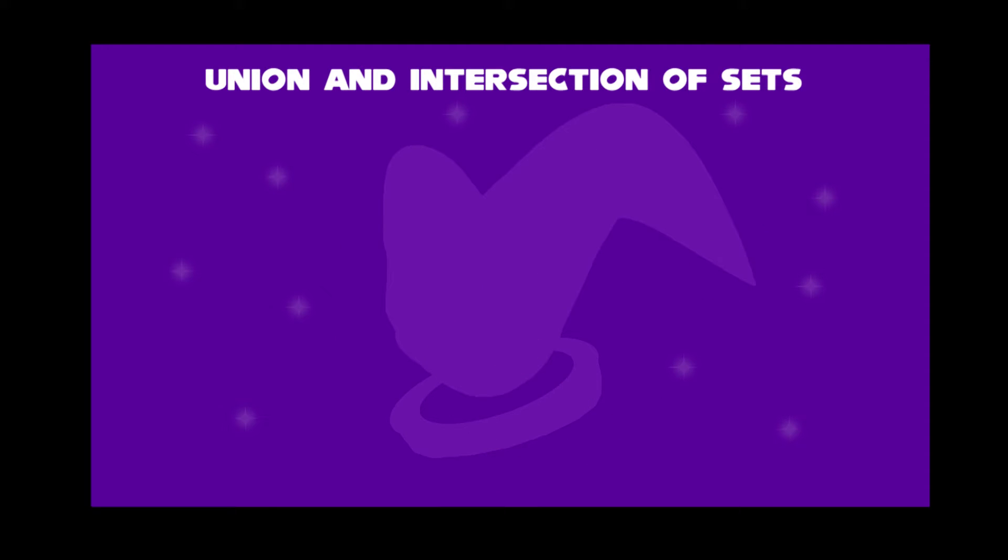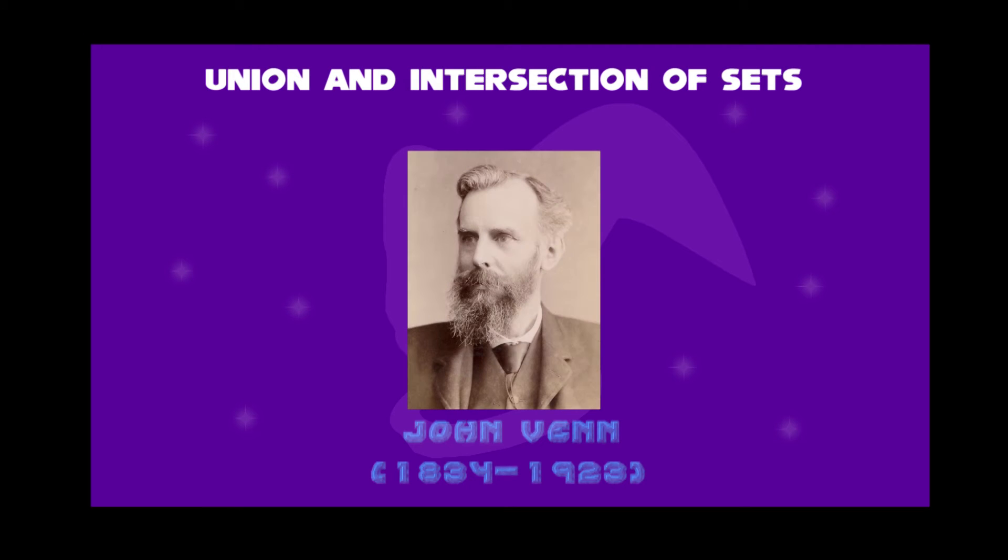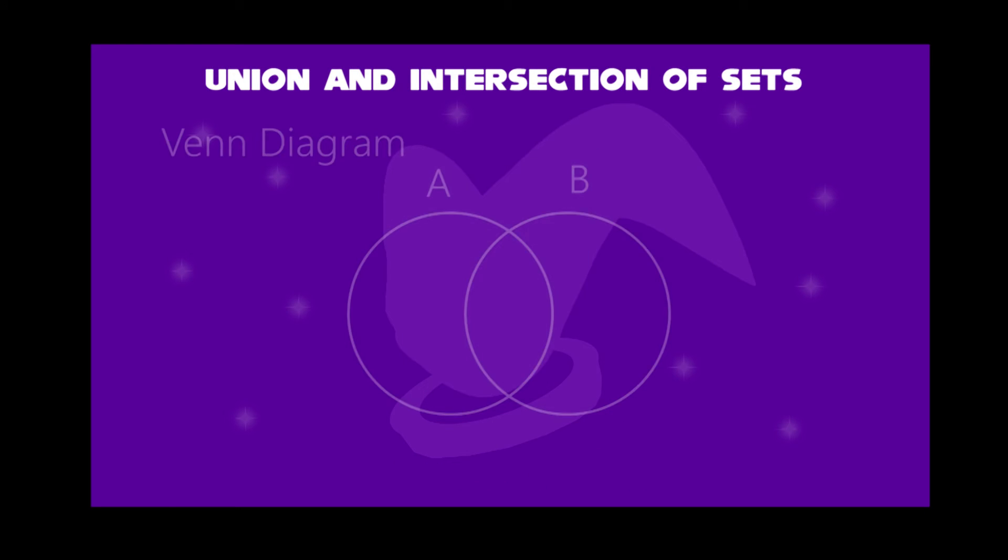Next, we will learn about Venn diagrams. This comes from the English mathematician John Venn, 1834-1923. We have two circles A and B. The middle portion will show the intersecting area.